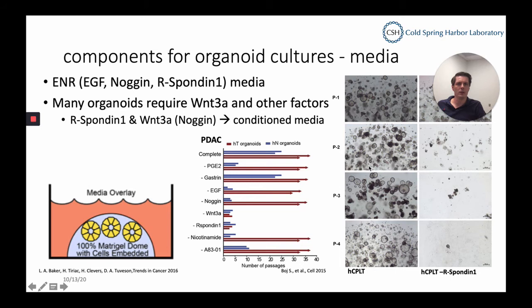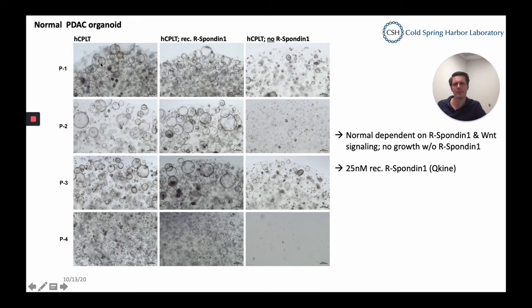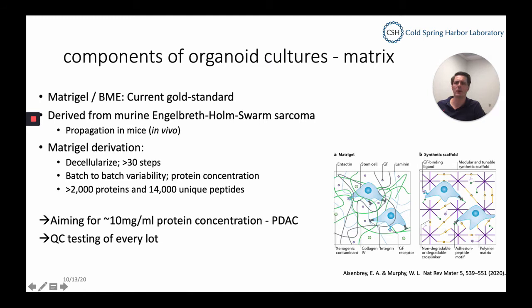In the upper right panel, you can see a comparison of one human tumor culture from pancreatic cancer. In complete human media, everything grows fine. If you remove Rspondin and shut down Wnt signaling, everything dies. The same is true in normal organoids, which are even more sensitive. In the middle panel, we replaced our Rspondin conditioned media with recombinant Rspondin from Q-Kine, and we couldn't see a difference — everything was growing very nicely. As a control, removing Rspondin from complete media shows how the culture dies or has far fewer cells.